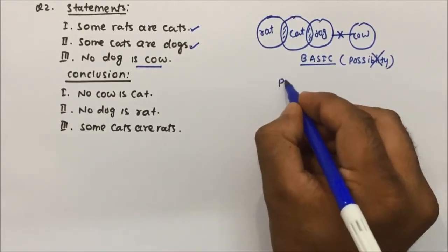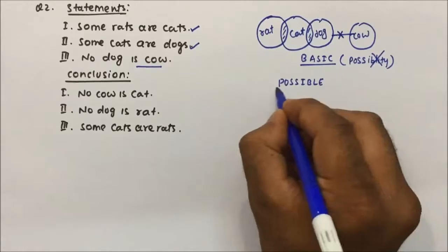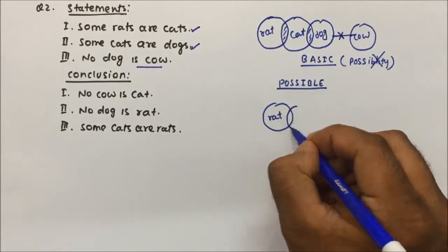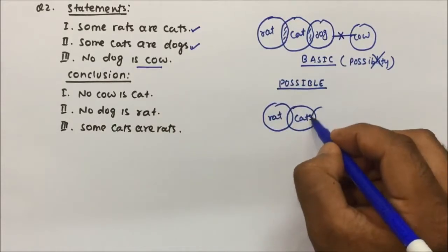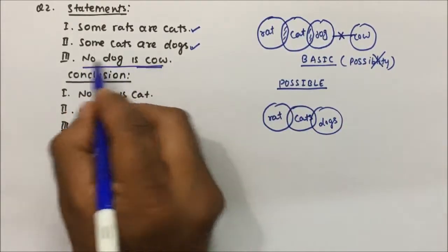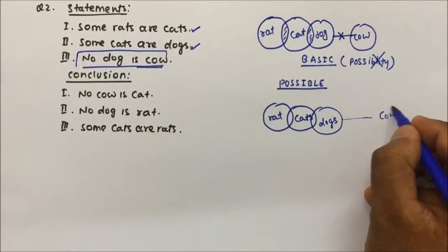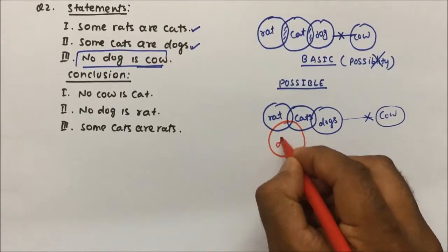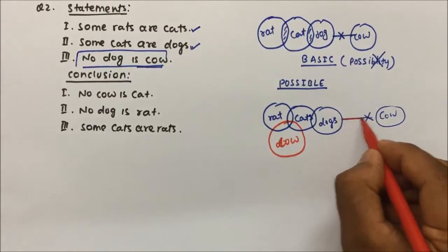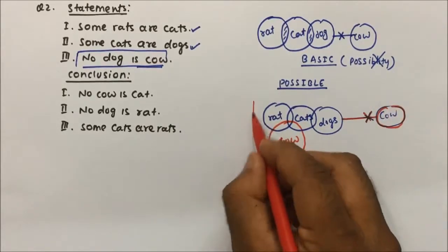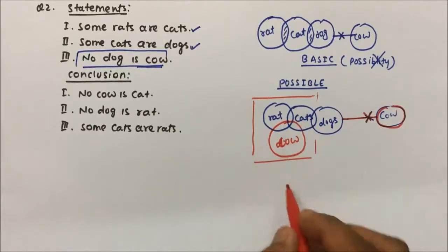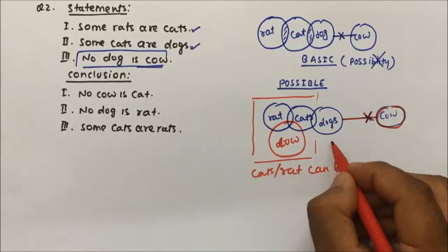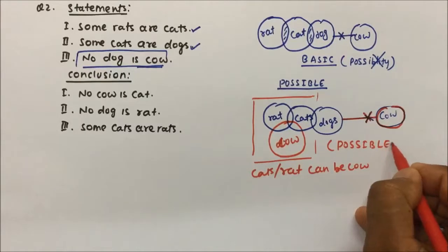Now we can also make some possible diagrams. See what is a possible diagram. The first statement — some rats are cat — I am not going to change. Some rats are cat, and some cats are dog. Now they say no dog is cow, so dog and cow have no relation. But there may be a relation between rat, cat and cow. They clearly mention no relation between dog and cow, but they didn't tell what is the relation between rat, dog and cow. There may be a possibility that rats can be cow or cats can be cow — this becomes a possible diagram which we have not considered in the basic diagram.